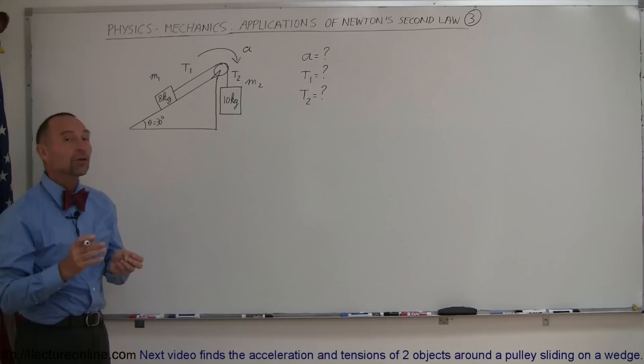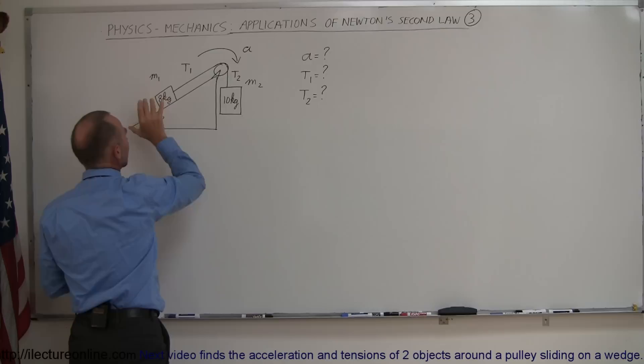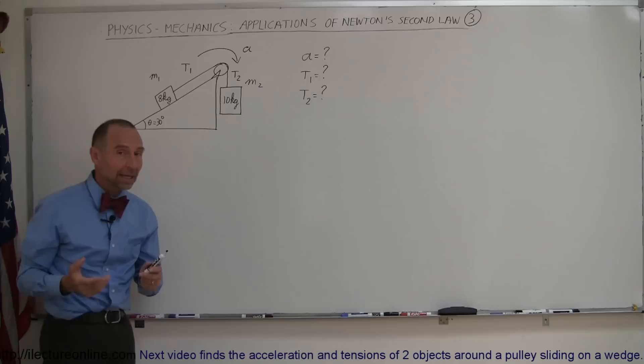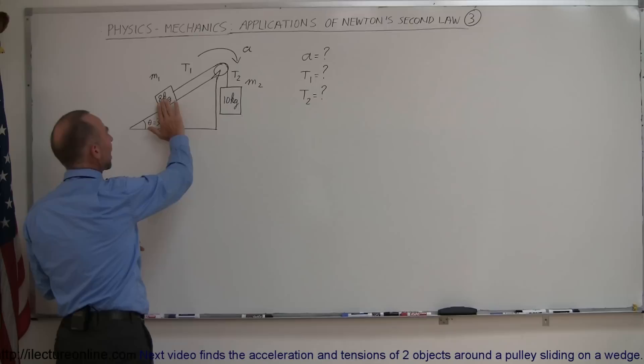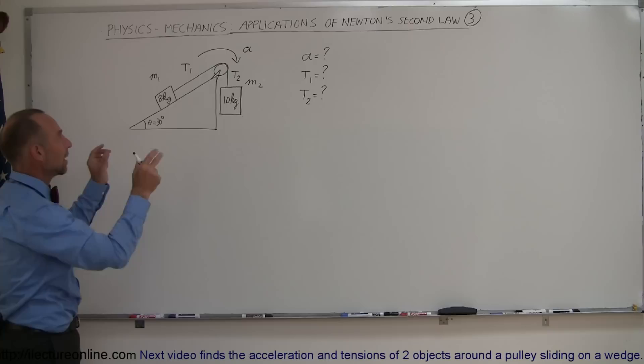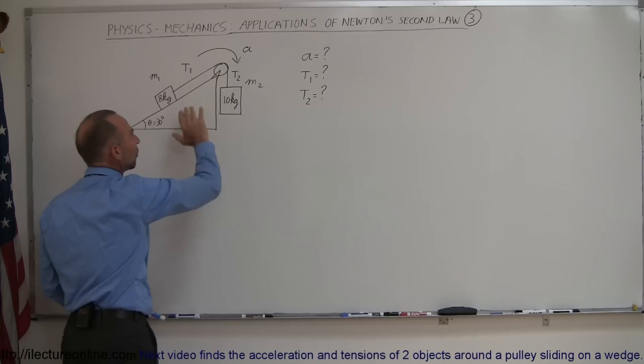We can solve this using free body diagrams on each component and solve them simultaneously. Although I like to reserve that methodology for more complicated problems where that's really the only way. There's actually an easier way: we can look at the 8 kilogram mass, the 10 kilogram mass, and the string in between as a single system and look at all the forces acting on that system. Using that technique, we do not need to worry about the tension in the string right now because that's internal to the system.